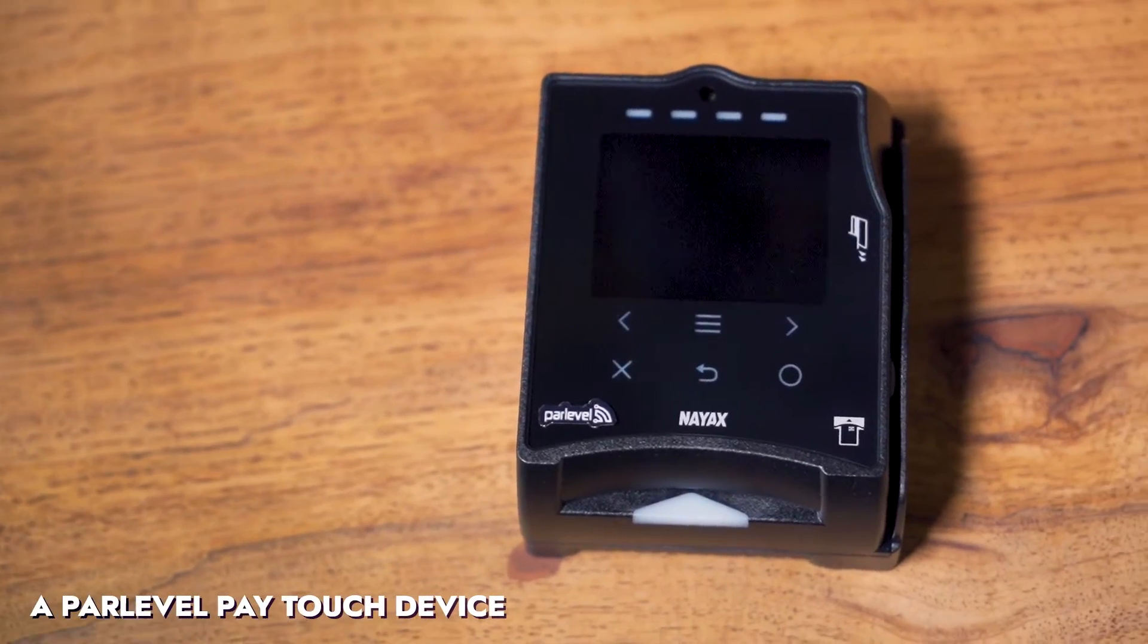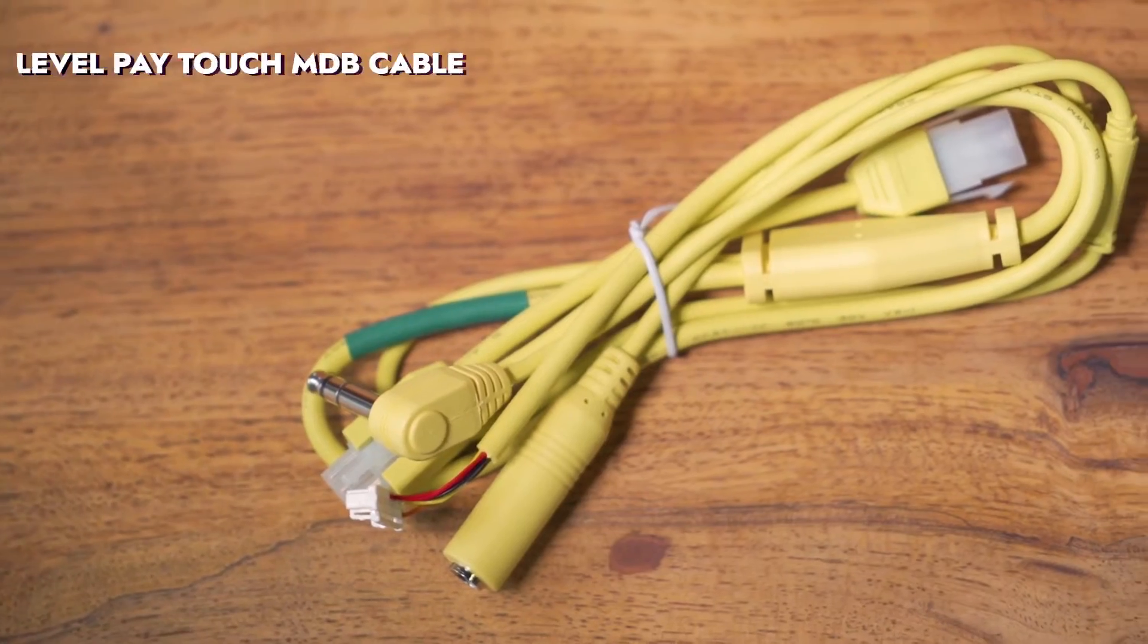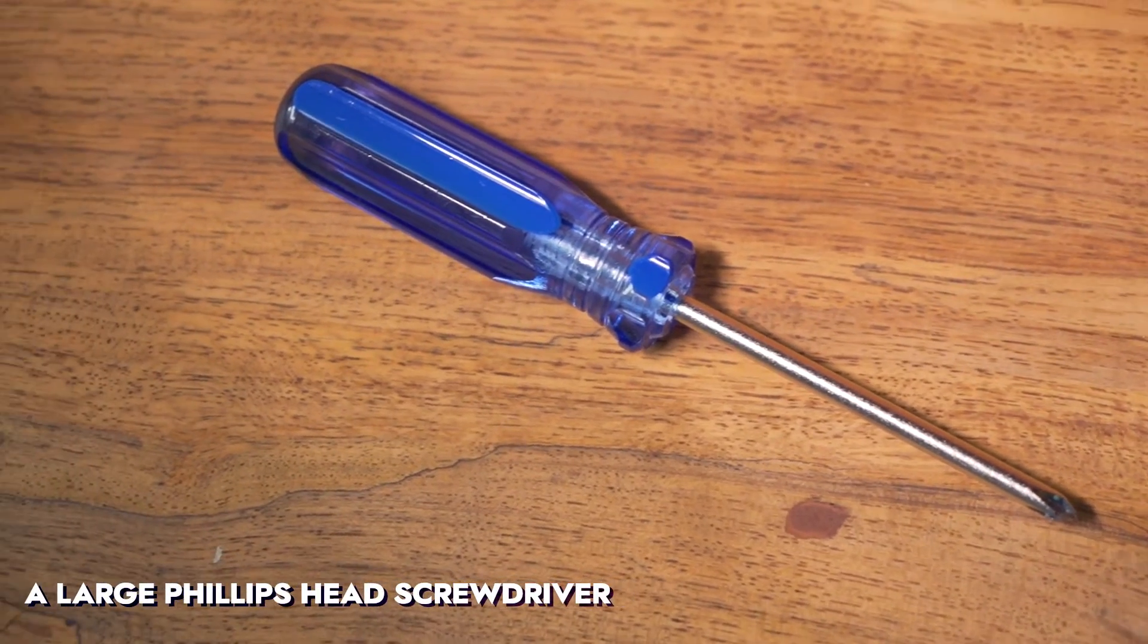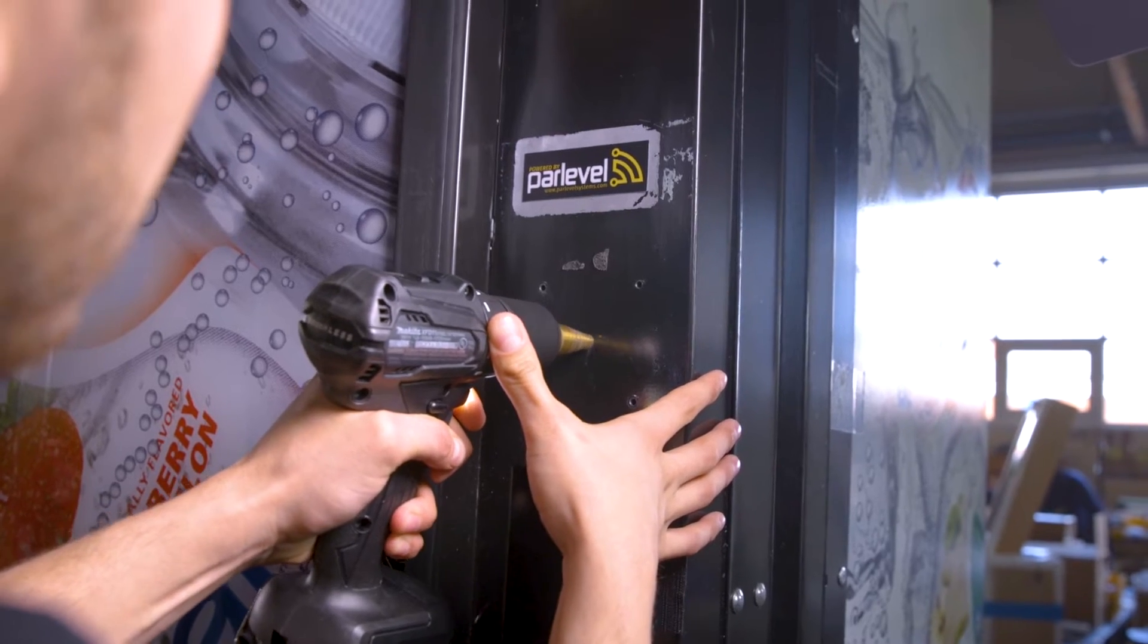The items needed for the install will be a ParLevel PayTouch device, a backplate which is attached to the device, a PayTouch MDB cable, and a large Phillips head screwdriver. And in some instances for machines that do not have a knockout plate, a drill will be required to make holes necessary to mount the PayTouch device.